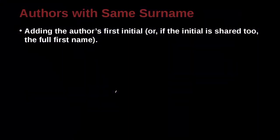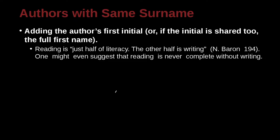What about the special case where you have authors that have the same name? So here in this example: 'Reading is just half of literacy, the other half is writing. N. Barron, 94.' One might even suggest that reading is never complete without writing. In this case, why do we have the N here? Because somewhere in our paper we have another author, and his name is also Barron. So we put the N here to separate this Barron from the other Barron.